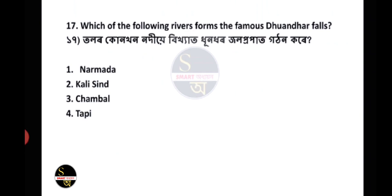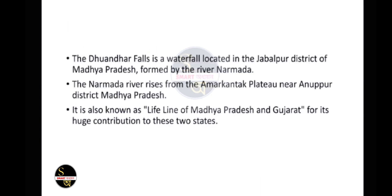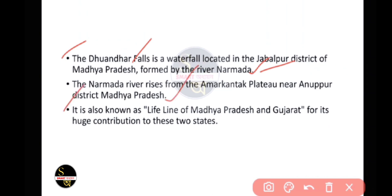Question 17: Which of the following rivers forms the famous Dhuandhar Falls? The answer is Narmada. Dhuandhar Falls is a waterfall located in the Jabalpur district of Madhya Pradesh, formed by the river Narmada. The Narmada river originates from the Amarkantak plateau near Anuppur district, Madhya Pradesh. It is also known as the lifeline of Madhya Pradesh and Gujarat.